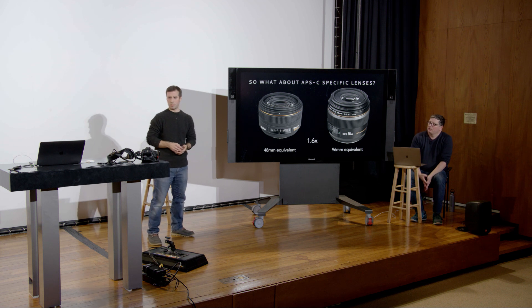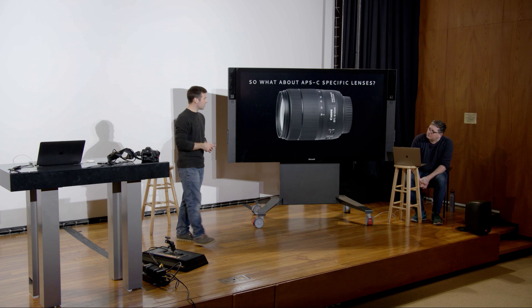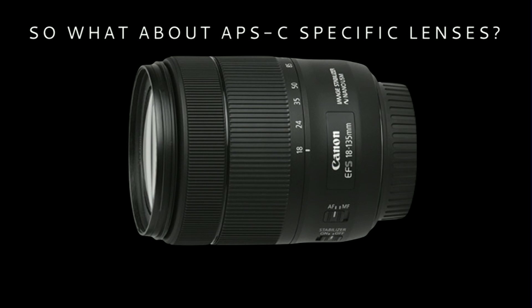Let's look at markings on a specific lens. This zoom lens goes from 18mm to 135mm and is made for APS-C. Doing the math with the 1.6x crop factor, the equivalent range is 28mm to 216mm — not the actual focal length, just the equivalency.